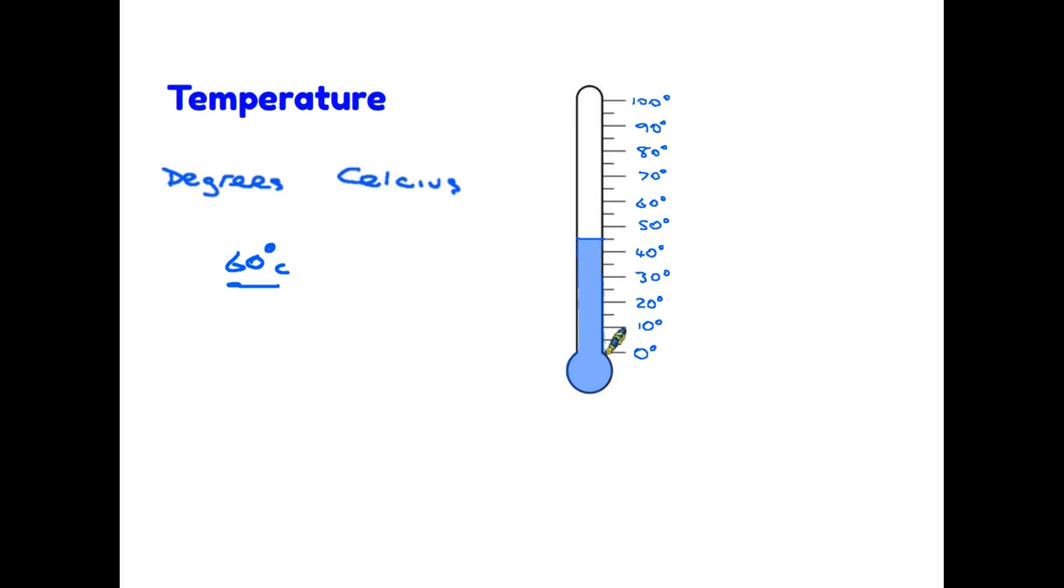So the scale is actually 5, 10, 15, 20, 25, 30, and so on. So that when we're reading this particular scale, we can see the liquid within it comes up to halfway between 40 and 50. So the temperature on this scale is 45 degrees Celsius.